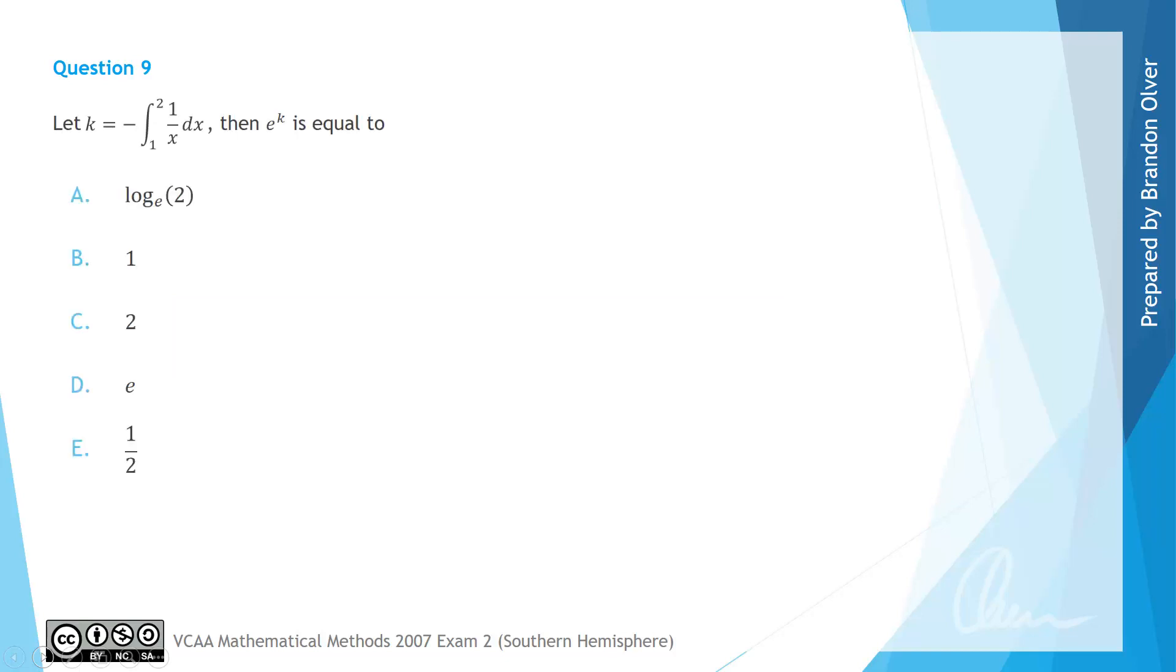So we have exactly the same question, but this time we'll approach it by hand and you'll also see why it's more efficient to use the CAS calculator. So first of all, if k is equal to negative the integral of 1 to 2 of 1 over x with respect to x.